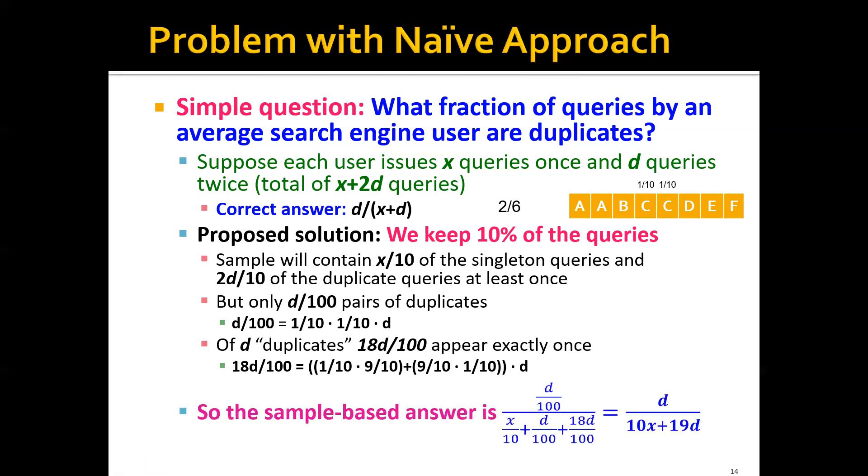Therefore, we have the sample-based answer. If we calculate the proportion, the answer the naive algorithm gives will be d/10 times x plus 19 times d, which is obviously not correct. It's actually much, much smaller than the correct answer.